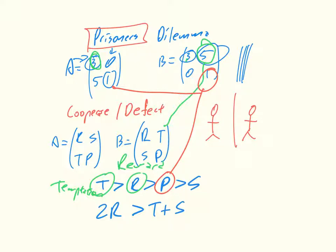And then finally, we've got the sucker. And so this is what happens when the other one takes advantage of you, and so you get a value of zero is the one we have here. And so this set of three inequalities is what defines a prisoner's dilemma.